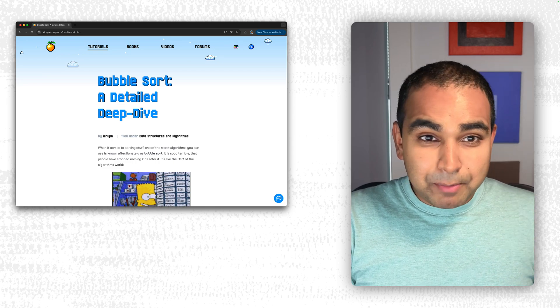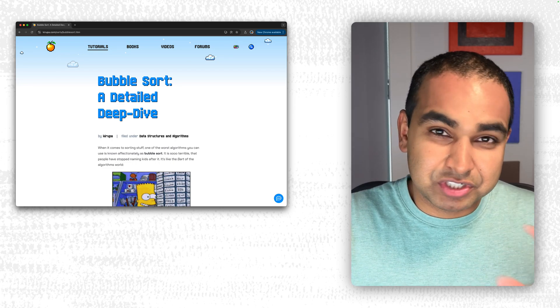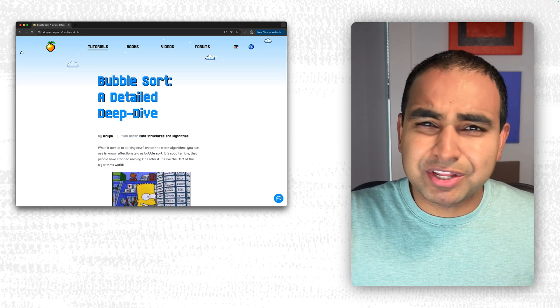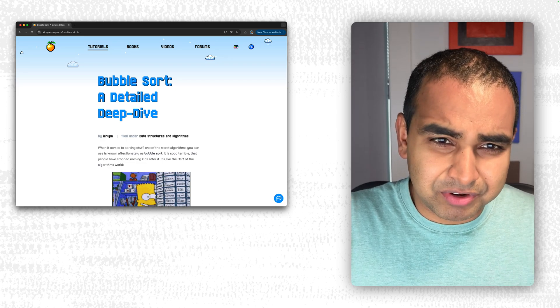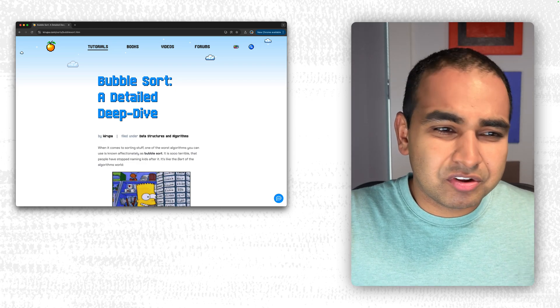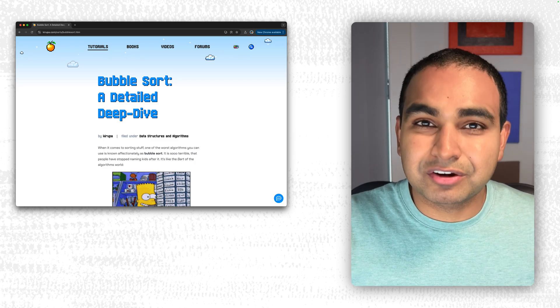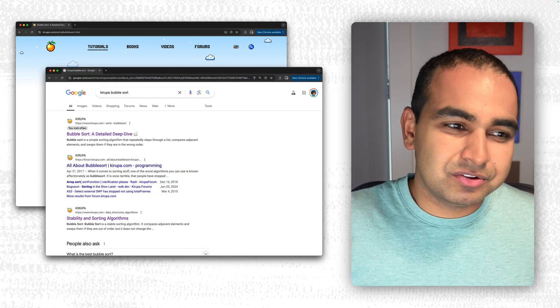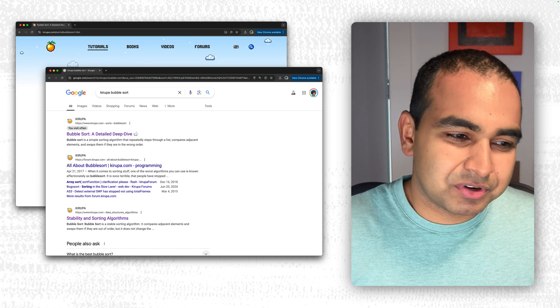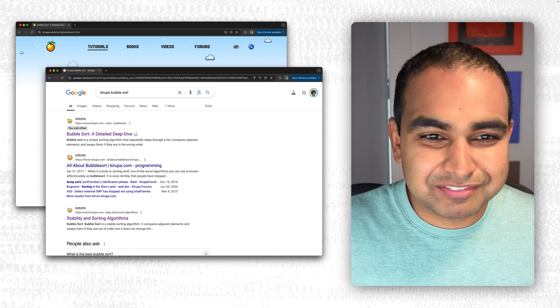And so to learn how bubble sort is actually implemented, it has a JavaScript implementation. Instead of writing through and walking through code on screen, which is never quite fun, just go to my tutorial on this on bubble sort, a detailed deep dive. It's on karupa.com. Easiest way to get to it is just go to Google, type in Karupa bubble sort, and you'll see my article on this coming up very quickly.